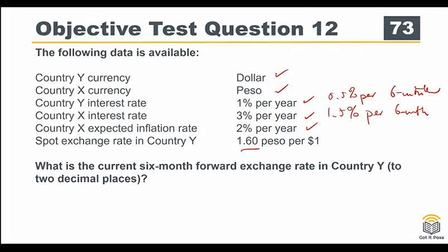To summarize: the key difference between interest rate parity and purchasing power parity is that PPP is all about inflation and is used to forecast the exchange rate at some future point, while IRP is about the cost of capital across different countries being equal in the long run, and is used for forward rate quotes. It is very important to understand this distinction well before working on past paper questions.